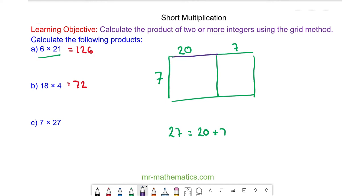The area of this section is 20 multiplied by 7 and the area of the next section is 7 times 7. So here we have 140 and here we have 49. So the total area is 189.